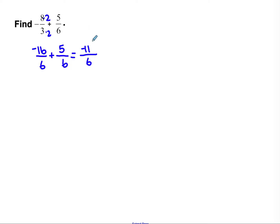Anytime you have a final answer that is an improper fraction — meaning the numerator, the top part, is bigger than the denominator, the bottom part — that means the value is more than 1, and we're going to change it into a mixed number. Sometimes in multi-step problems it's helpful to leave it as an improper fraction until you get to the end, but we are at the end of this problem.